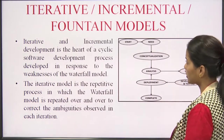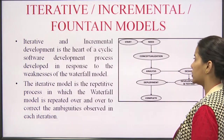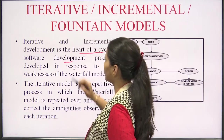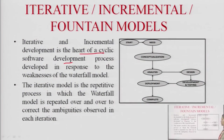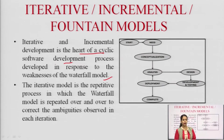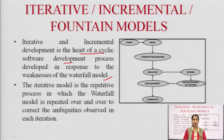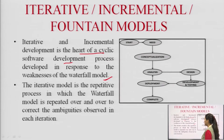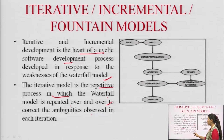The next model is the iterative, incremental, or fountain model. Iterative and incremental development is the heart of a cyclic software development process, developed in response to the weaknesses of the waterfall model — specifically, the inability to go back and change something if a loophole is found mid-process. The iterative model is a repetitive process in which the waterfall model is repeated over and over to correct ambiguities observed in each iteration.